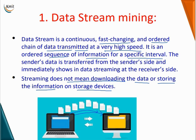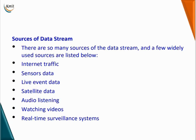Continuously the data is being transmitted by one system and received by another. Some of the sources of data stream are internet traffic, sensor data like IoT sensor data, temperature and humidity data, live event data, satellite data, audio, watching videos, and real-time survey and surveillance systems.